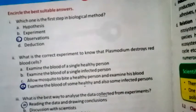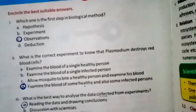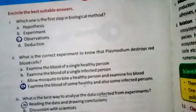Now we come to unit number two, which is Solving a Biological Problem. Question one: Which is the first step in the biological method — hypothesis, experiment, observation, or deduction? The right option is observation.